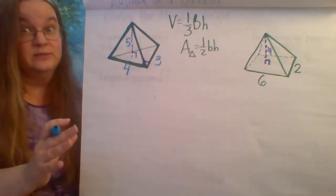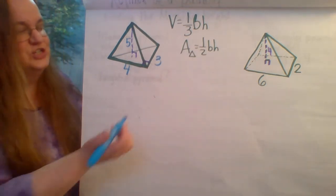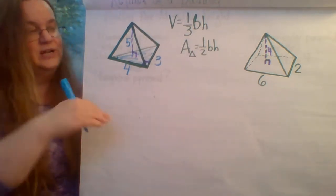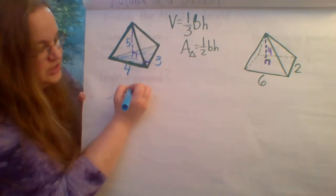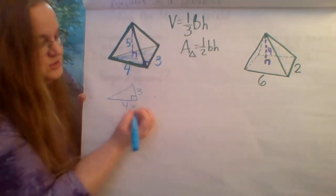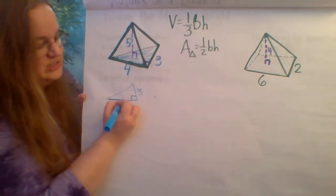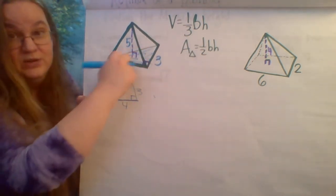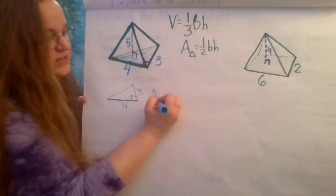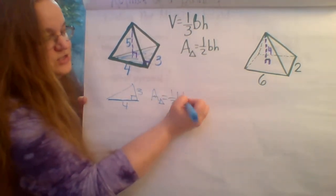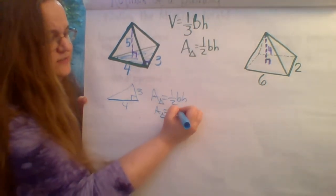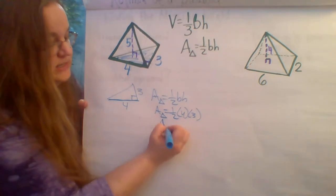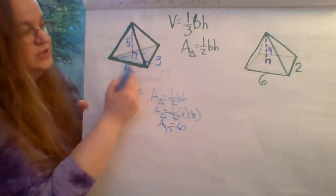This is where it starts to get a little confusing because we're using the word 'base' in different situations. We're using base to represent the shape the pyramid is sitting on — that's one kind of base. And then when we're looking at just that triangle, the base can also describe the side that the triangle is sitting on. So this is the shape on the bottom of the pyramid, and we start by finding the area of this shape. One-half base times height.